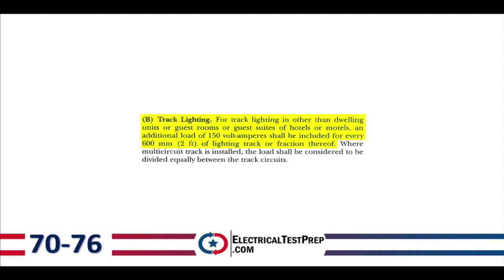Letter B, Track Lighting: for track lighting in other than dwelling units, guest rooms, hotels, or motels, an additional load of 150 volt-amps shall be included for every 2 feet of lighting track or fraction thereof. For a 10-foot track: 150 × 5 = 750 volt-amps.